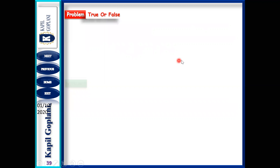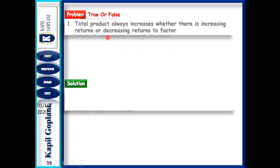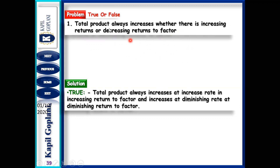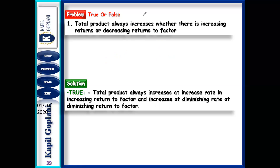Next problem: Total product always increases whether there is increasing return or decreasing return to a factor. This is true. In increasing return, TP increases at an increasing rate. In diminishing return, TP increases at a diminishing rate. TP increases in both stages. It is only when the negative stage comes that TP falls.